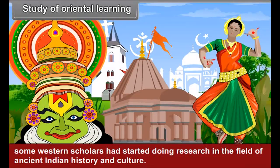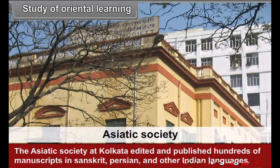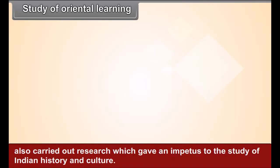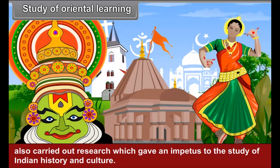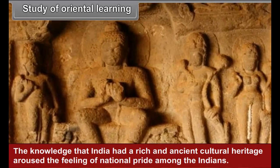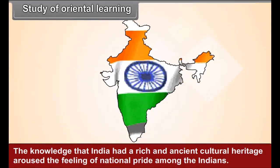Study of Oriental Learning: In the latter half of the 18th century, some Western scholars had started doing research in the field of ancient Indian history and culture. The Asiatic Society at Kolkata edited and published hundreds of manuscripts in Sanskrit, Persian, and other Indian languages. Indian scholars like Dr. Bhau Daji Lad and Dr. R.G. Bhandarkar also carried out research which gave an impetus to the study of Indian history and culture. This made a valuable addition to Oriental studies. The knowledge that India had a rich and ancient cultural heritage aroused the feeling of national pride among the Indians.